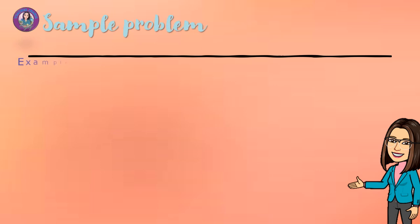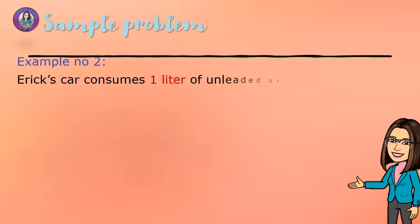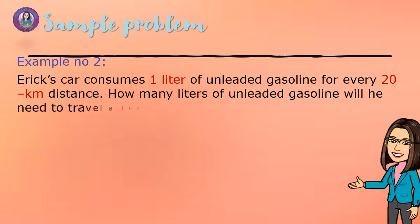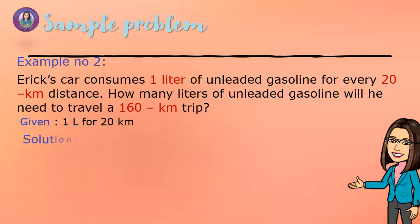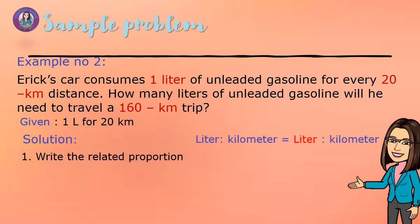Next example: Eric's car consumes 1 liter of unleaded gasoline for every 20 km distance. How many liters of unleaded gasoline will he need to travel a 160 km trip? Given: 1 liter for 20 km. First, write the related proportion. We have liter to kilometer equal to liter to kilometer. That is 1 liter to 20 km, equal to N liters to 160 km.